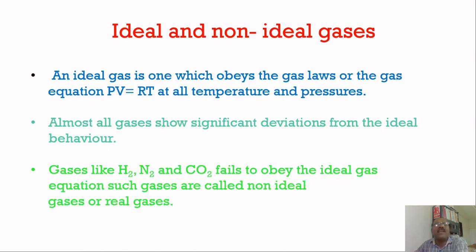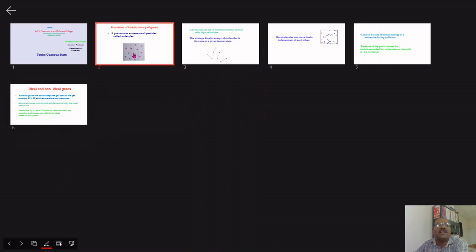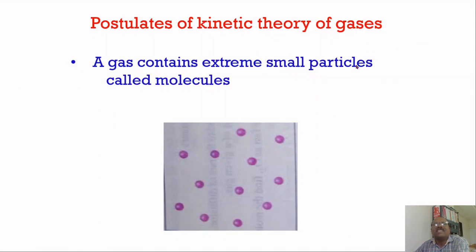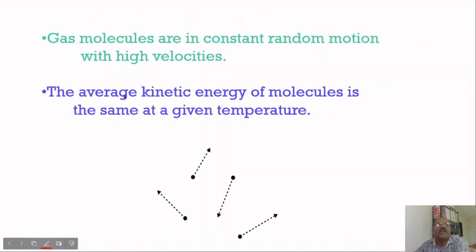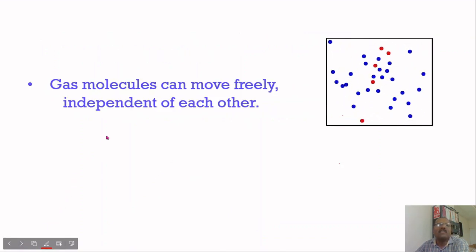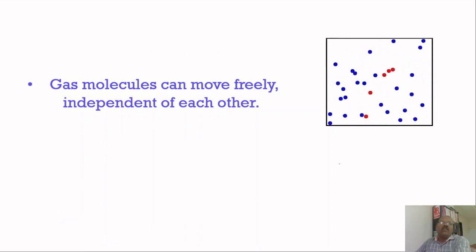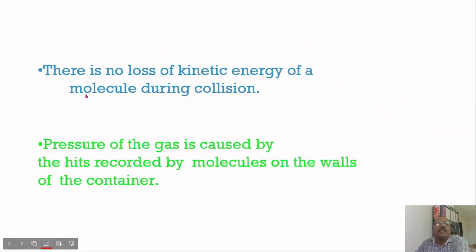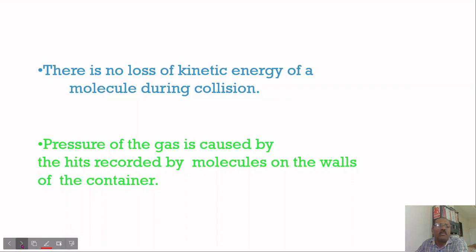These are all the postulates of the ideal gases. Ideal gases show all these properties: the gas contains extremely small particles; gas molecules are under constant random motion with different velocities; the average kinetic energy of the molecules is the same at a given temperature; gas molecules can move freely independent of each other; there is no loss of kinetic energy during collision; and pressure is due to the hits by molecules on the wall of the container.